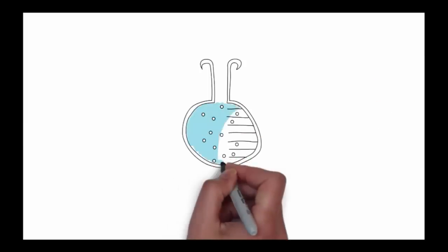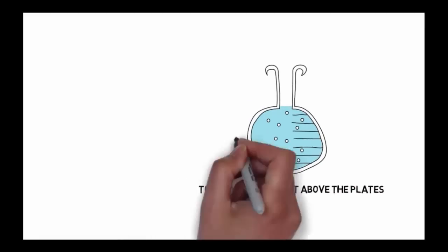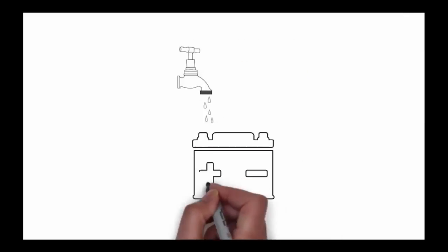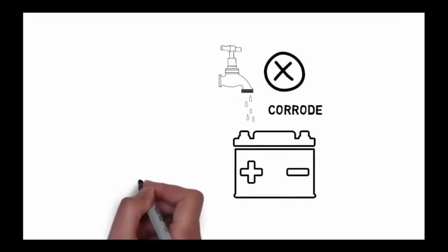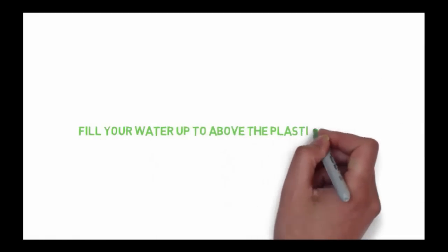Next, fill the cells with distilled water to a level just right above the plates. The water must be distilled. Using tap water may corrode your battery, and car batteries usually have a plastic cover over the plates. You must fill your water up to above the plastic cover top.